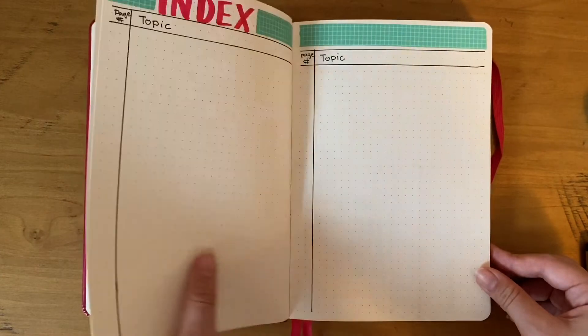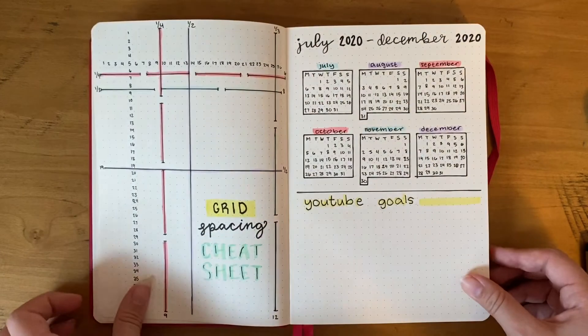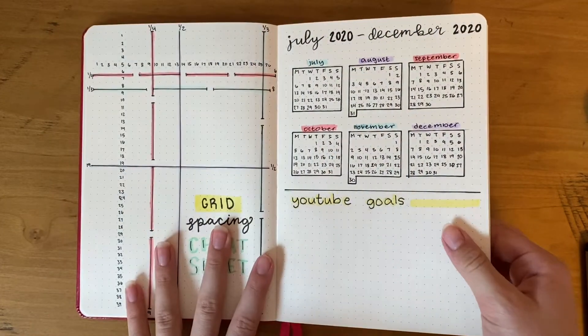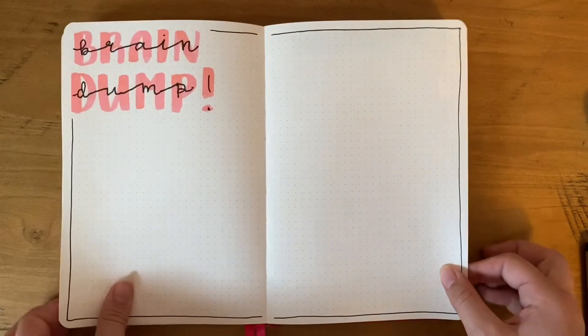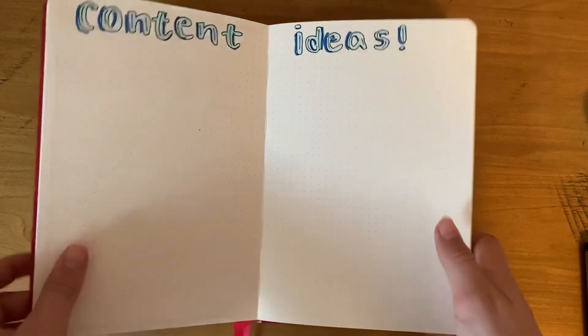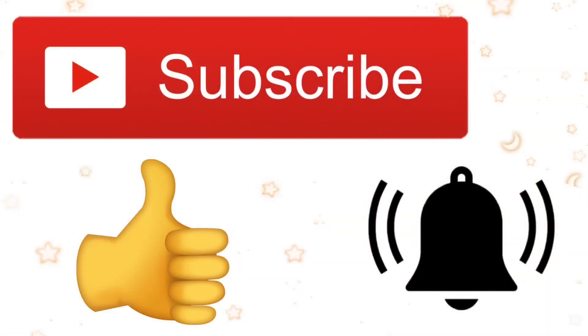This is the flip through of the final setup of this bullet journal: the index, the grid spacing, the calendar and YouTube goals, and then the brain dump and content ideas. Stay tuned because next week's video is my July plan with me. If you like this content, make sure to give it a thumbs up and subscribe for weekly content. Yeah, bye!